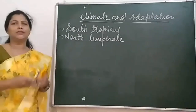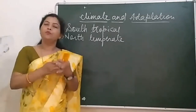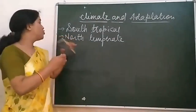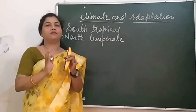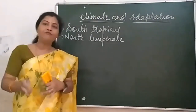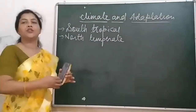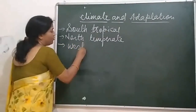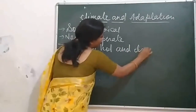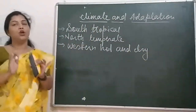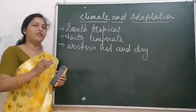In general, if we talk about India, then most regions have what you can say tropical monsoon, with significant seasonal variation in rainfall and temperature. The western part of India is hot and dry.